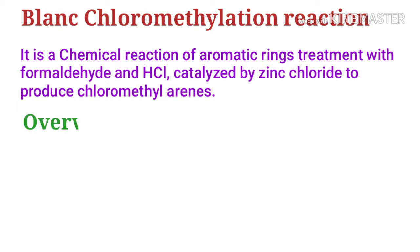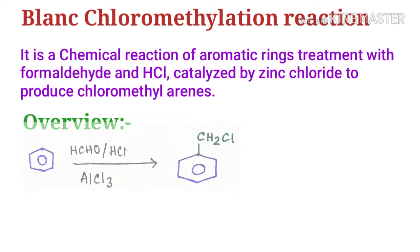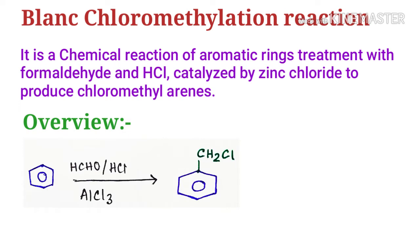The overview of this reaction: when benzene is treated with formaldehyde, hydrogen chloride, and catalyzed by aluminum trichloride, we finally get chloromethyl benzene as the major product.